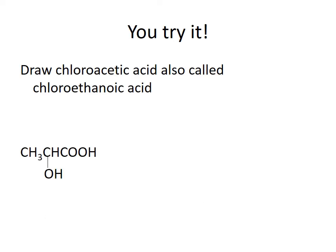Here are some problems for you to try. First, draw chloroacetic acid, also called chloroethanoic acid. First, draw acetic acid, which is a two-carbon acid. The chlorine must be on a carbon that's not in the functional group, so it has to be on the carbon alpha to the acetic acid. So this is chloroacetic acid.